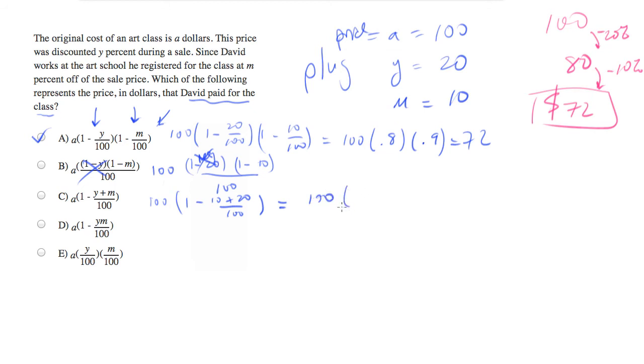I'm just going to plug this into my calculator and see what I get. 10 plus 20 is 30. Over 100 is 3 tenths. 1 minus that is 7 tenths times 100. Close but no cigar. We get a 70 here.